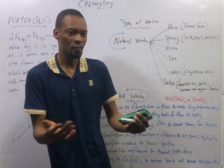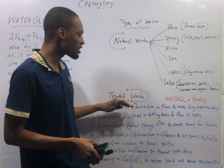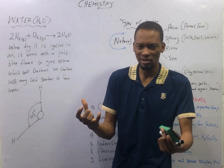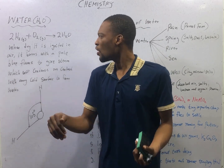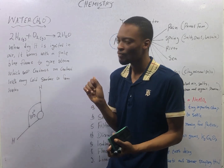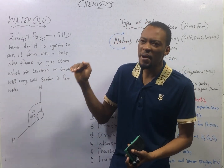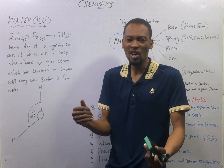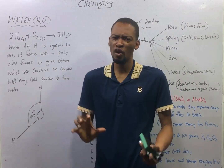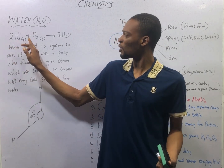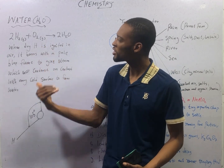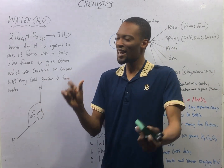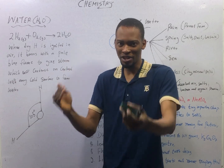We have two types of water: natural water and treated water. Water is a compound made up of hydrogen and oxygen. When dry hydrogen is ignited in air, it burns with a pale blue flame to give steam. When this steam comes in contact with a cold surface, it condenses to form water. So hydrogen gas plus oxygen gas gives you 2H₂O. This is the equation for formation of water. The bond angle between water is 105 degrees and the shape of water is bent, V-shape or angular.